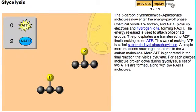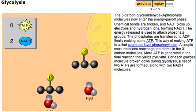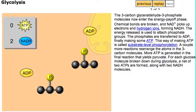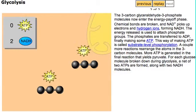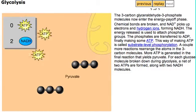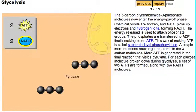A couple more reactions rearrange the atoms in the three-carbon molecules. More ATP is generated in the final reaction that yields pyruvate. For each glucose molecule broken down during glycolysis, a net of two ATPs are formed, along with two NADH molecules.